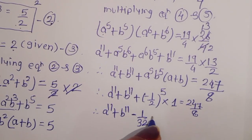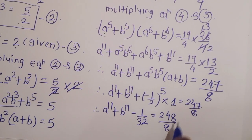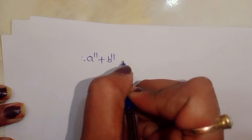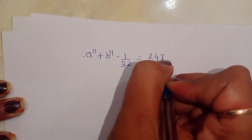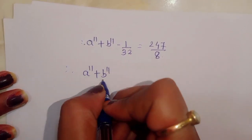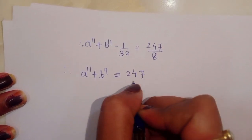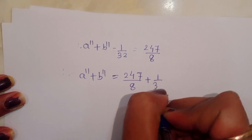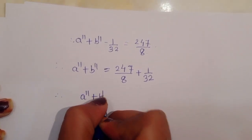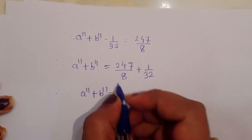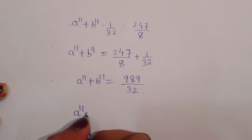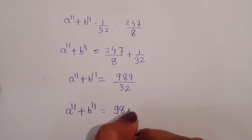Therefore a power 11 plus b power 11 minus 1 upon 32 equals 247 upon 8, since 2 power 5 is 32. So a power 11 plus b power 11 equals 247 upon 8 plus 1 upon 32. Taking LCM and solving, we get 989 upon 32. Therefore the value of a power 11 plus b power 11 is equal to 989 divided by 32.